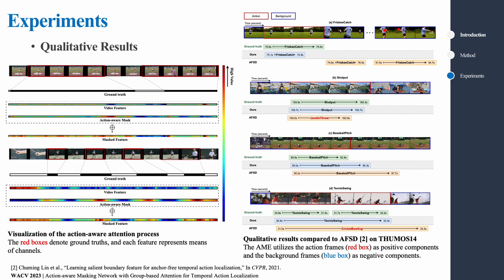We also conducted a comparative experiment with a model called AFSD. This model adopts an end-to-end approach which fine-tunes the model without weight freezing. Nevertheless, our model was able to get a more precise regression and classification result only by feature refinement through the action-aware attention.